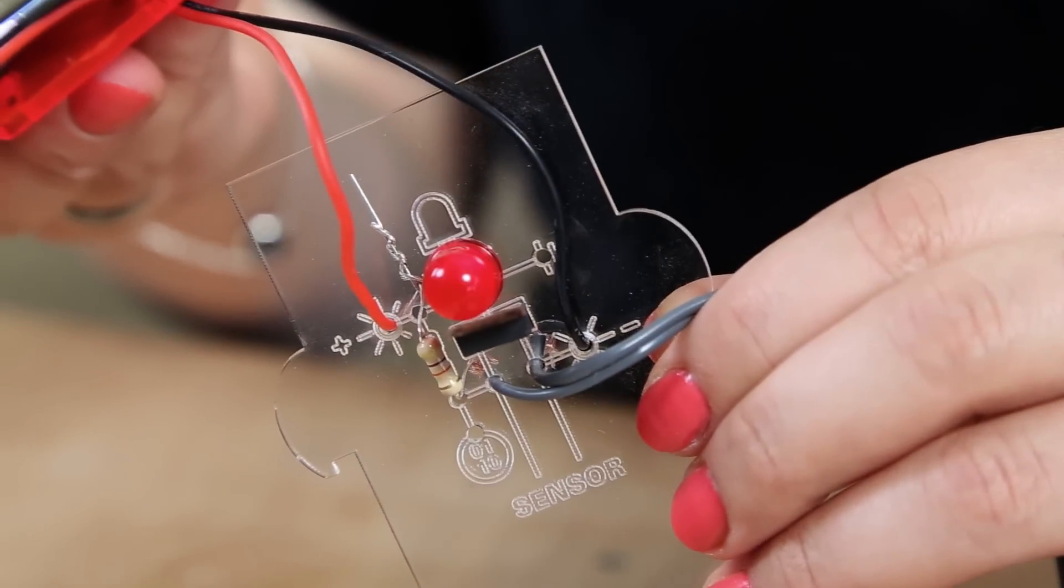So as you can see, the little LED light is blinking, which means that the circuit is complete. So if you hold the solar panel up to some light, you can see it blinking.